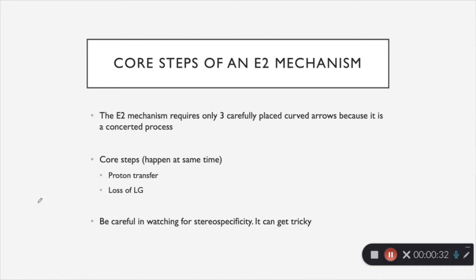In general, the E2 mechanism requires three carefully placed arrows in a concerted process. So all three things are going to happen at one time. The core steps that happen at the same time are a proton transfer and a loss of a leaving group.